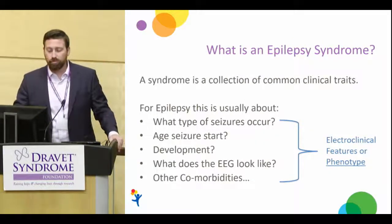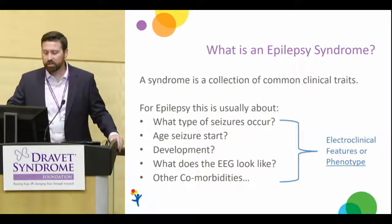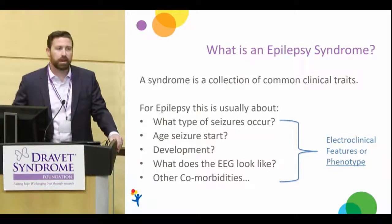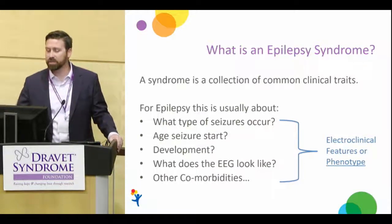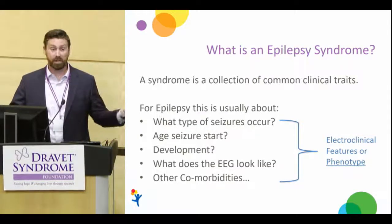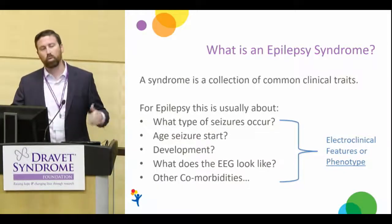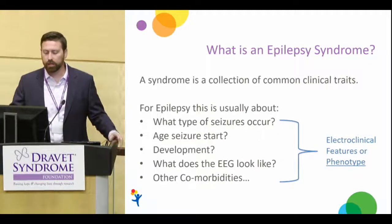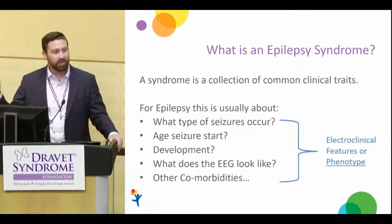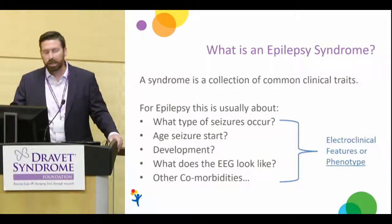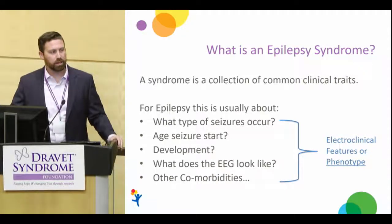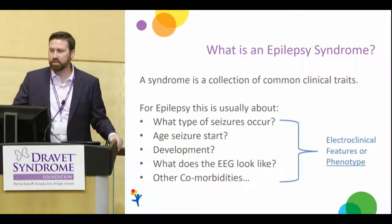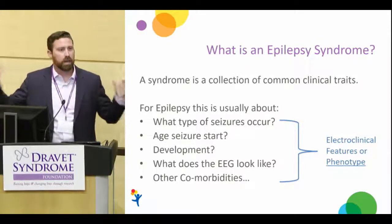So what is an epilepsy syndrome? A syndrome in medicine is essentially a constellation of symptoms — a collection of certain traits and features that a patient may have. In the context of epilepsy, we're usually talking about what types of seizures an individual has, when they started, other aspects of their neurologic condition, their development, what their EEG looks like, and comorbidities — everything neurologic that isn't the seizures.